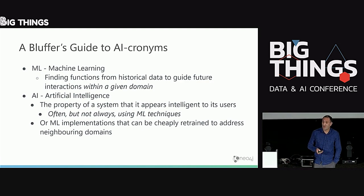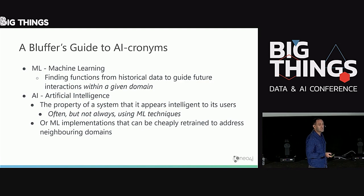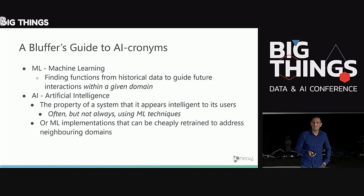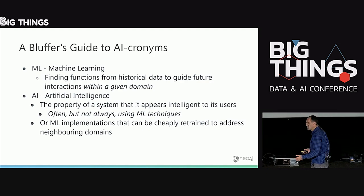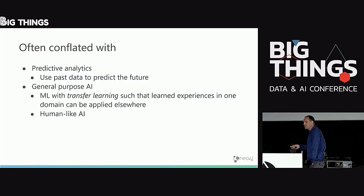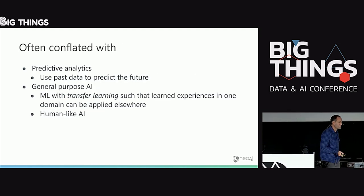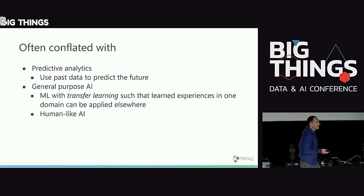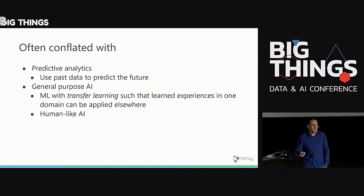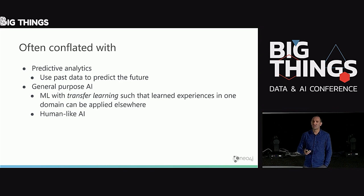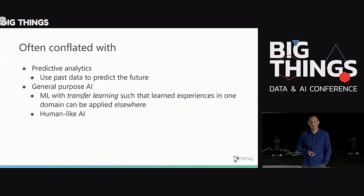We might think of AI as machine learning implementations that can be cheaply retrained to address neighboring domains. If you have a computer vision system that can distinguish animals, you may be able to change it cheaply to distinguish shoes. These things are often completed with predictive analytics — using the past to predict the future — contrasted with general purpose AI: machine learning with transfer learning so that learned experiences in one domain can be applied elsewhere. Human-like AI where if I bash my head on a wall and learn that it hurts, I don't need to bash my head on a table to know that will also hurt.